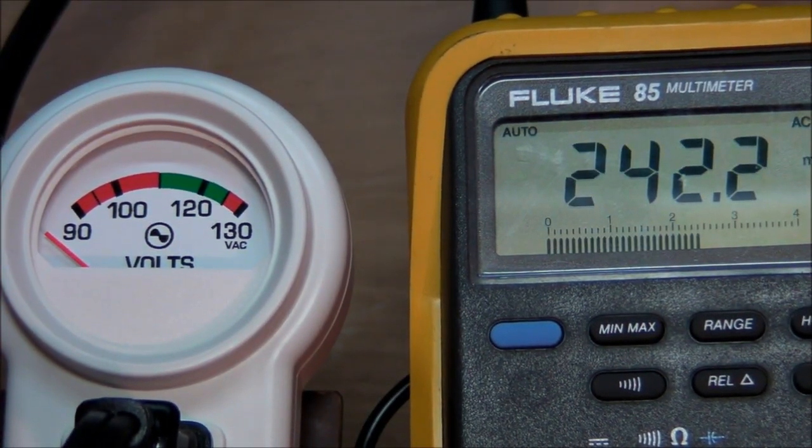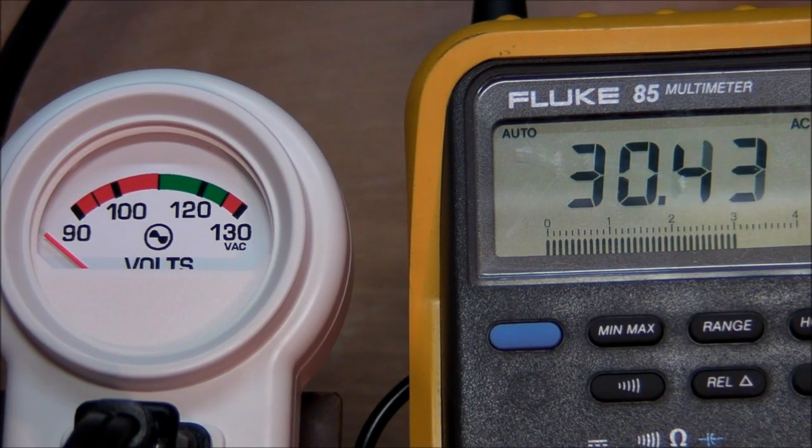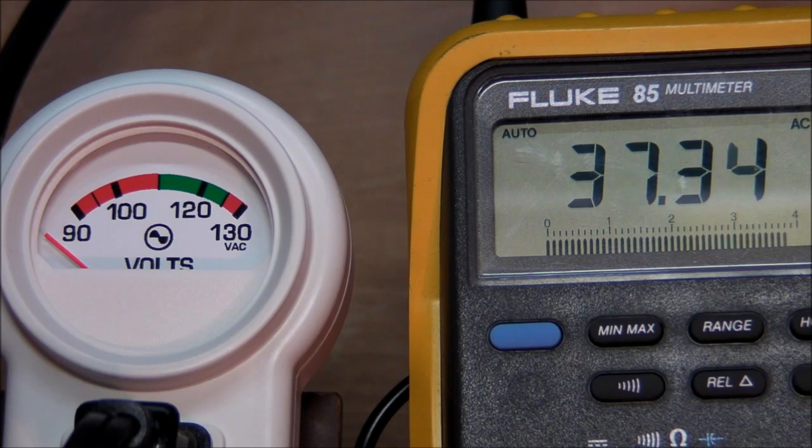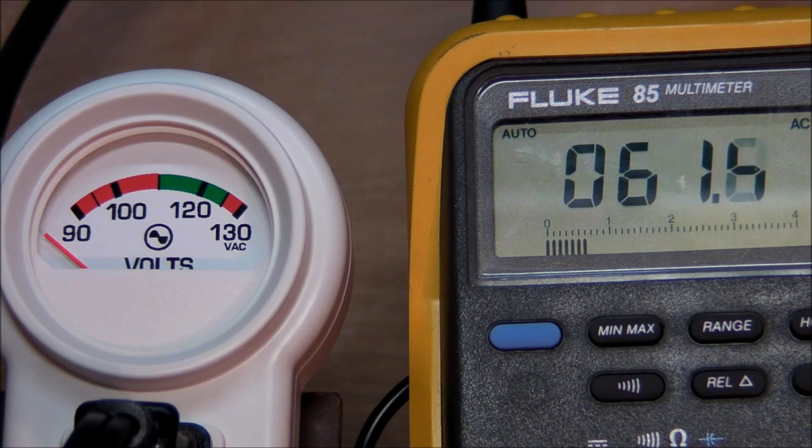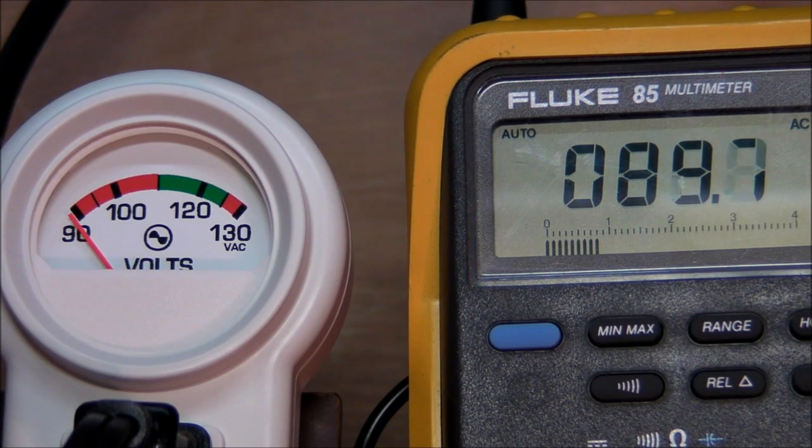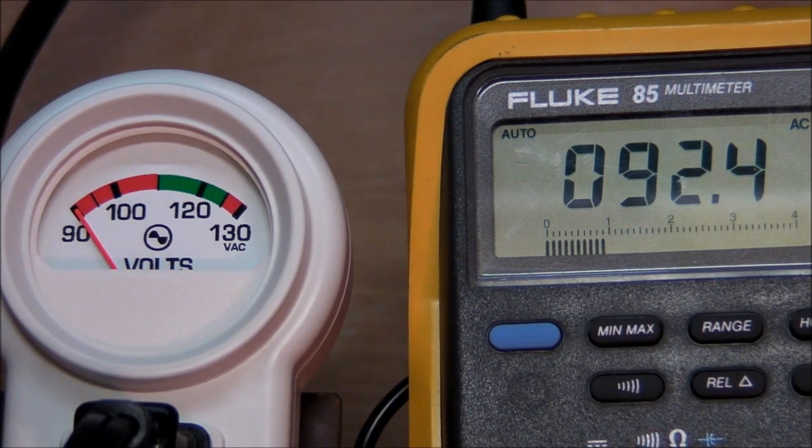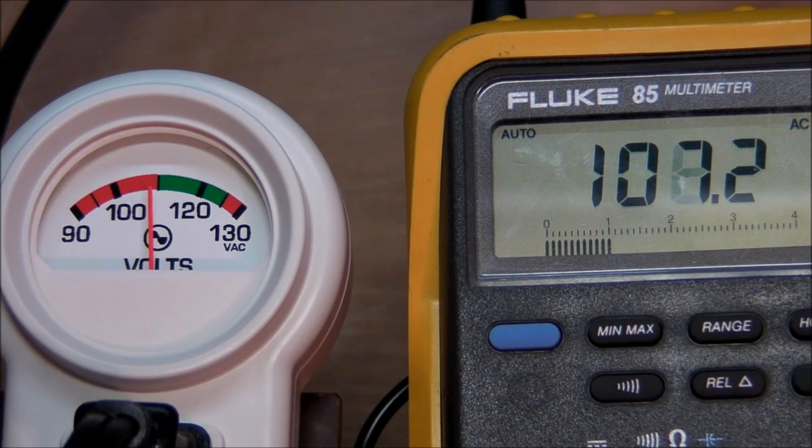So I'll flip on the Variac and turn it up. Turn it back down to zero. And there's no movement at all on the needle. We have 50 volts. Okay, now we've got some movement here. So around 70, 75 volts is when it finally starts moving.